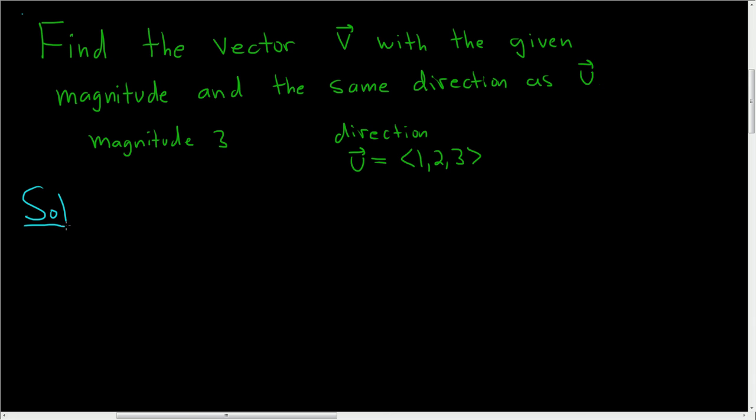We'll start by finding a unit vector in the direction of u. So the formula for that is 1 over the magnitude of u times the vector u.